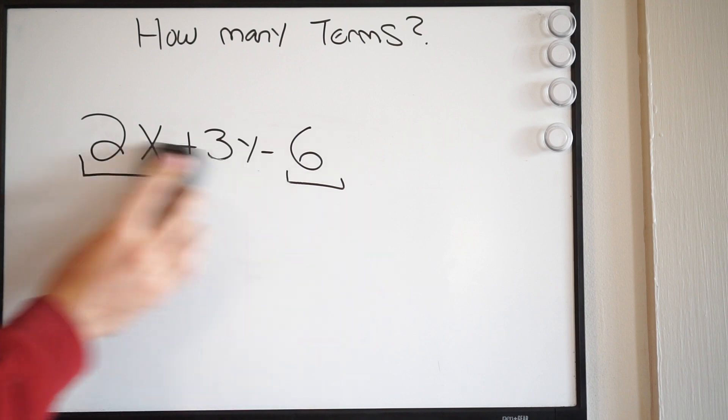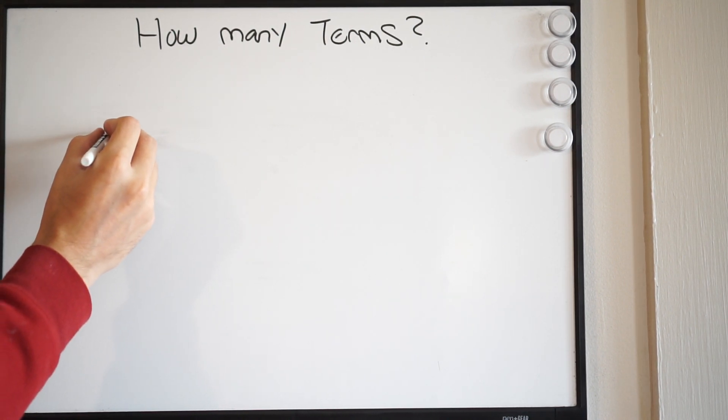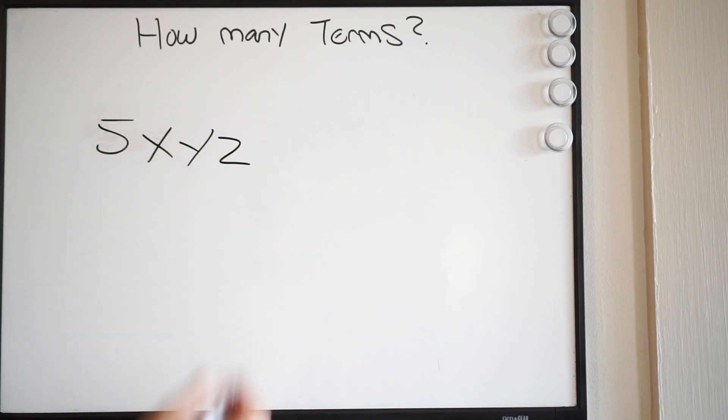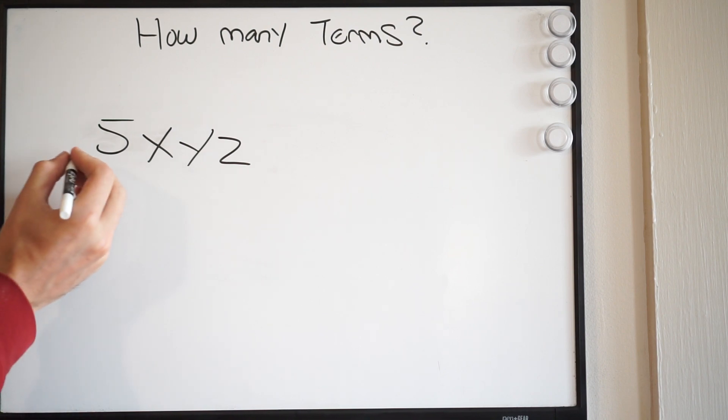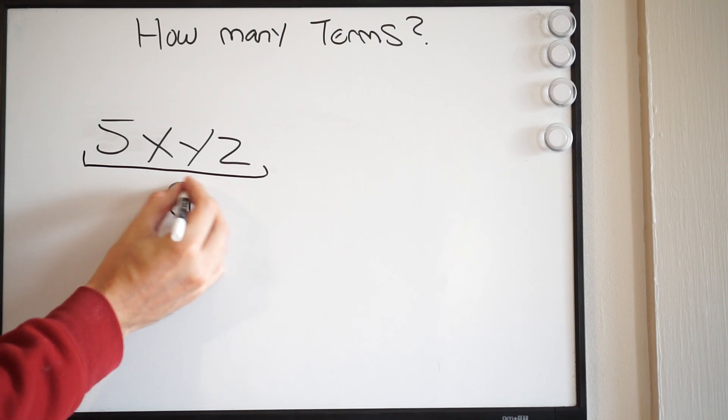All right, let's do a couple more. So here we go, we have 5xyz. So how many terms do I have here? Well again, you're looking for addition and subtraction. Do I have any of those operations? And we can see here that I don't have addition or subtraction, so this whole thing is one term.